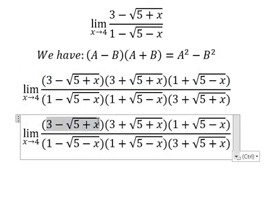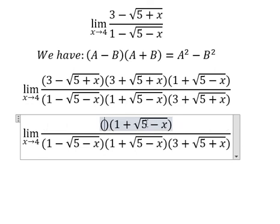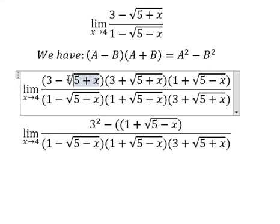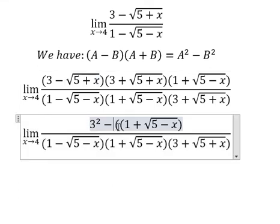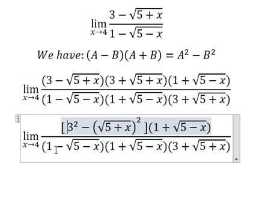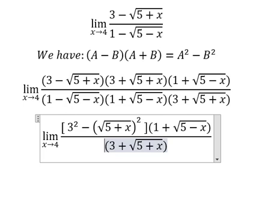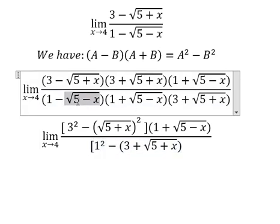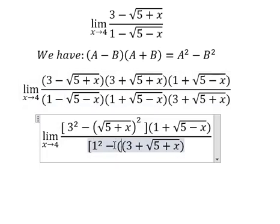This becomes 3 squared minus the square root of 5 plus x to the power of 2. Similarly, this is 1 squared minus the square root of 5 minus x to the power of 2.